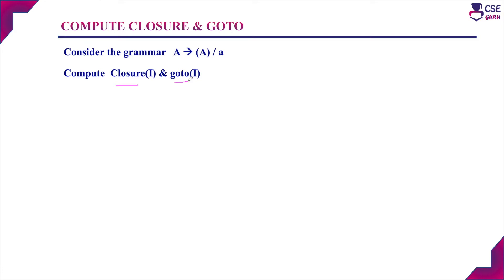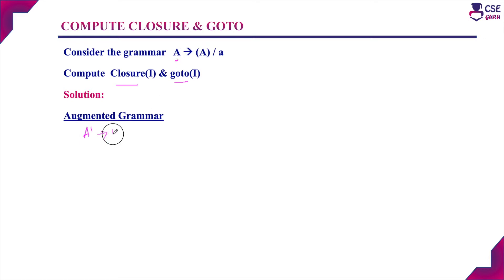For the given grammar, first we need to add the augmented grammar. That is the first step in computing the canonical collection of LR(0) items. The start symbol is A, so we need to add A' derives A, and the remaining grammar as it is: A derives open bracket A closed bracket, or A. This is the augmented grammar.